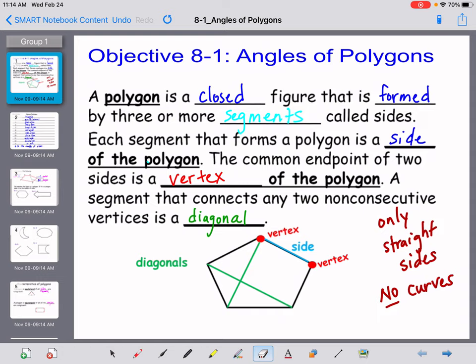One super important thing about polygons is it has to have straight sides. There can be no curves in a polygon.